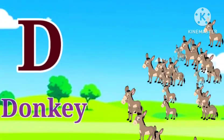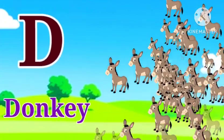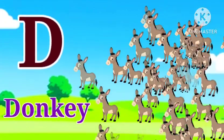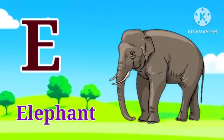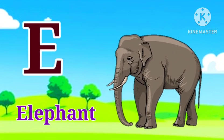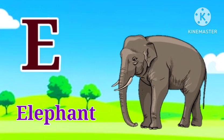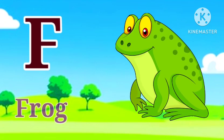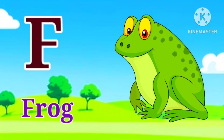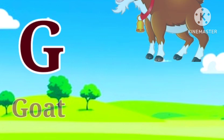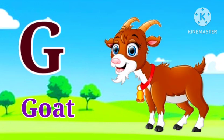D for donkey, donkey means gada. E for elephant, elephant means aati. F for frog, frog means mendhag.